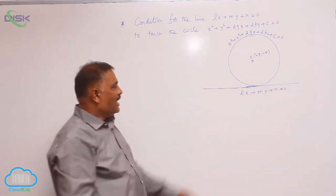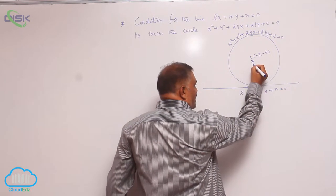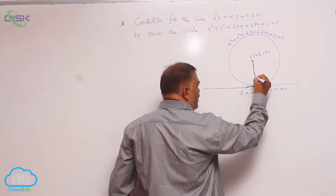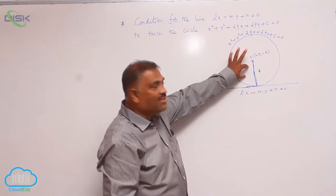We know that a line touches the circle means it is nothing but the perpendicular distance. This perpendicular distance d is nothing but the radius of the circle also.